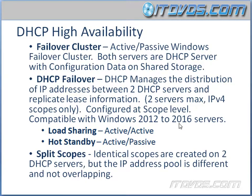When it comes to making DHCP highly available, we've got three main options. The first option is a failover cluster — an active-passive Windows failover cluster where both servers have the DHCP role installed, and the configuration data for DHCP is held on shared storage. This is nice because we can manually fail over the role to another node while doing maintenance, such as running Windows updates, and we also get automatic failover if one of our nodes crashes.